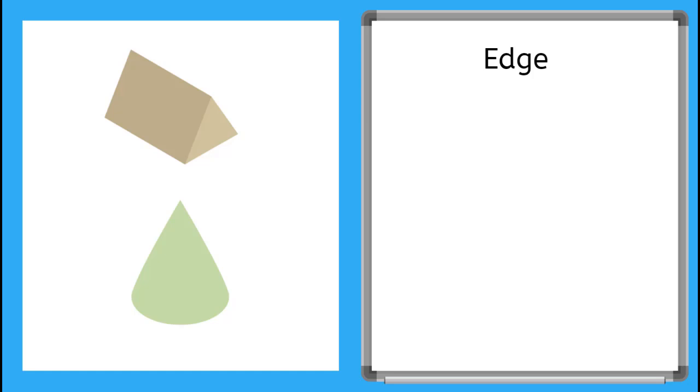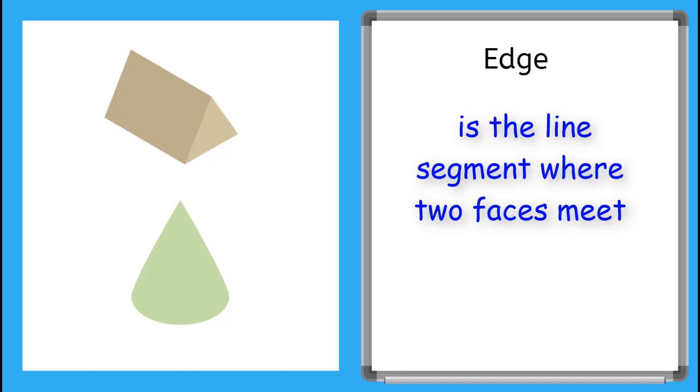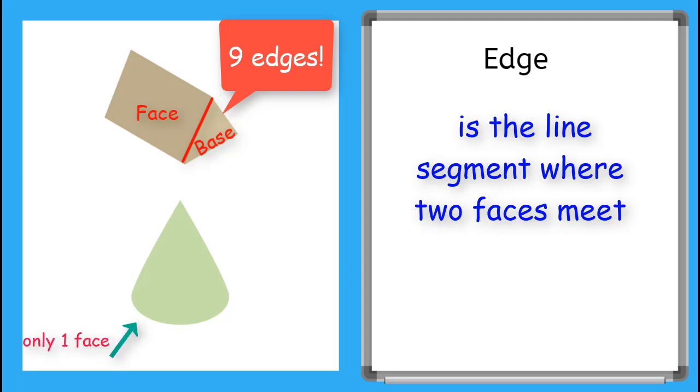An edge is the line segment where two faces meet. Notice where the base of this prism meets the face is a line. That is what the edge is. This triangular prism has nine edges. But look at this cone. It only has one face, the circular base. But since it only has one face, there are zero edges.